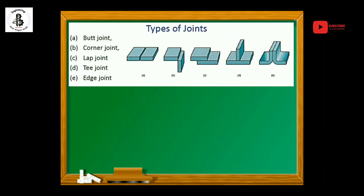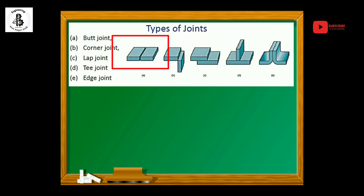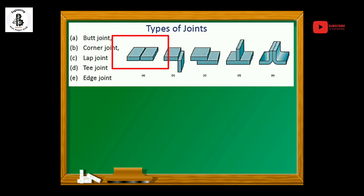Basically the first type will be a butt joint. As you can see in the figure, if you want to join two faces of the plates, that will be the requirement of the butt joint.